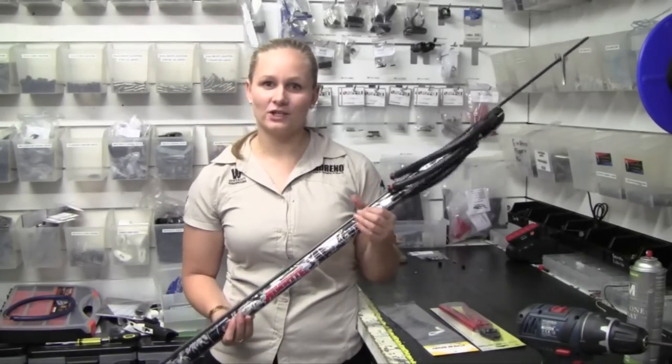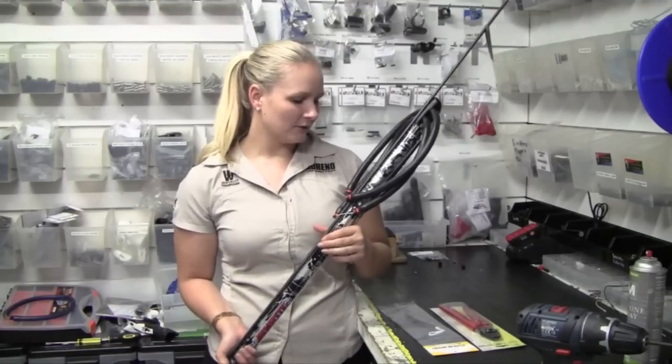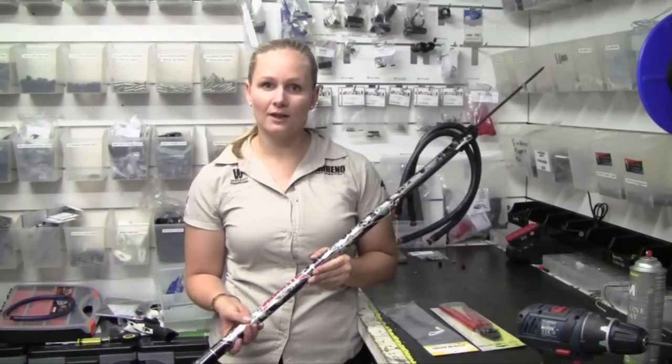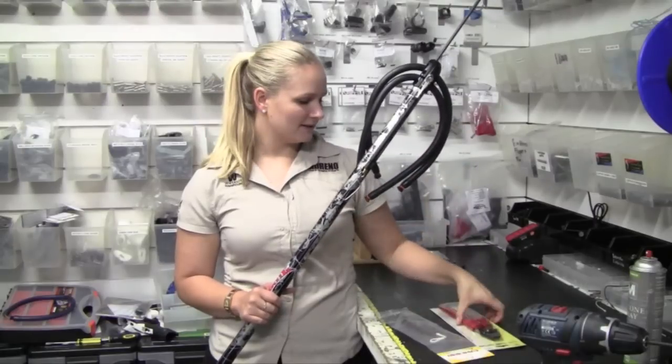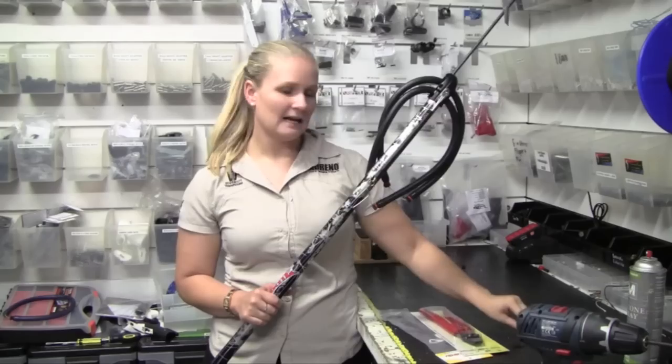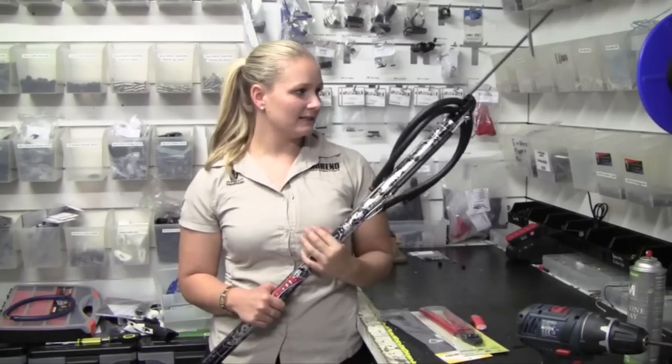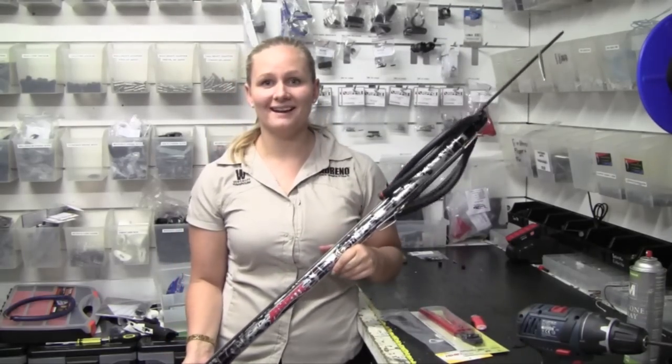Today we're just going to run through how to rig a shaft for your spear gun. So for this you'll need some mono line cut to the right length, a bungee, some crimping pliers, a ladder, some scissors and that's about it really. So we'll go through that now.